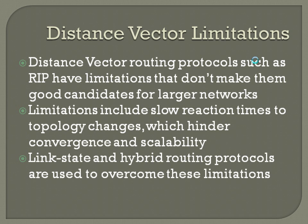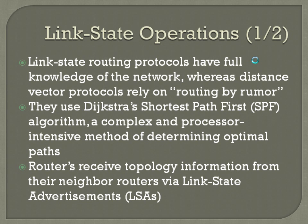Link State and Hybrid Routing Protocols are used to overcome some of these limitations. Link State Routing Protocols have full knowledge of the network, whereas distance vector protocols rely on routing by rumor. They go through a process of first identifying their neighbors — all of the routers in that network running that routing protocol. They form neighbor relationships, then share topology information so each router gets a full vision of the topology, and then each router individually runs an algorithm to determine the best route.